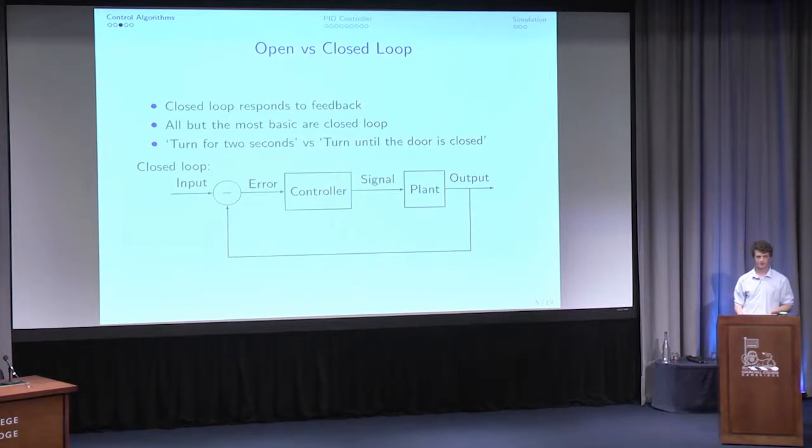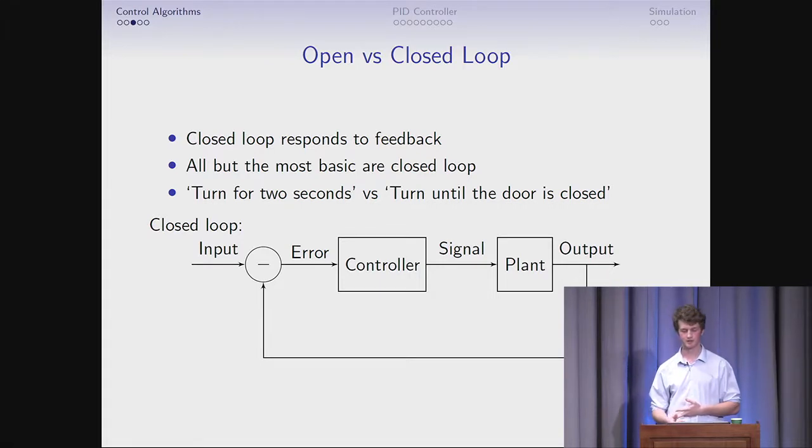In general, in control theory, we classify controllers into two categories: they're either open or closed. In closed, it means you respond to feedback. Really, all good controllers will respond to feedback because there's no way you can respond to unmeasured variables without looking at whether you've actually managed it. I've got an example: if you were trying to control a door, an open loop system would just say turn for two seconds, but a closed loop system would say turn until the door is closed. You can imagine a situation where the carpet's really dirty, the door gets stuck after two seconds, and it's not closed.